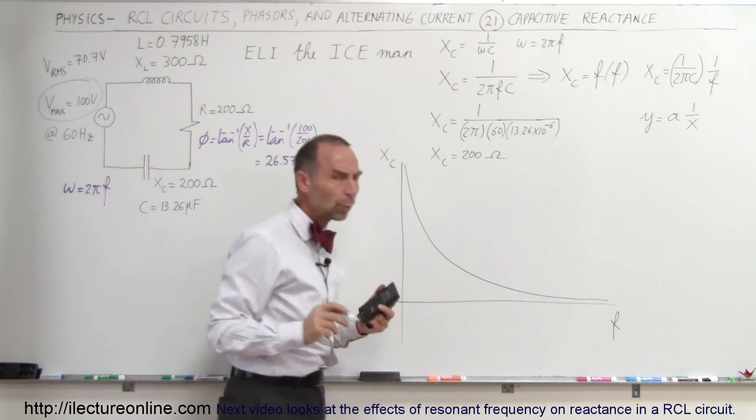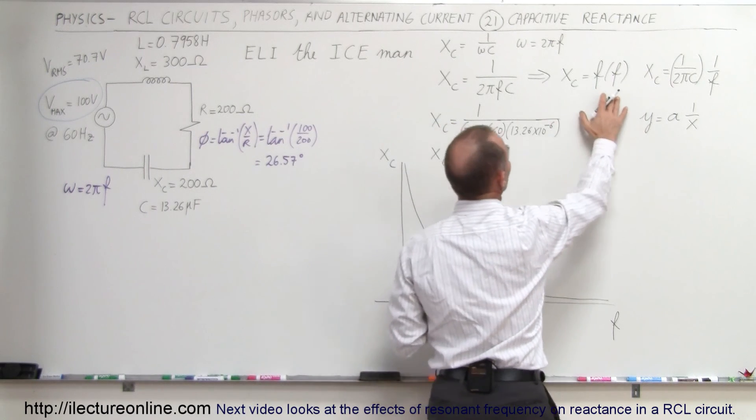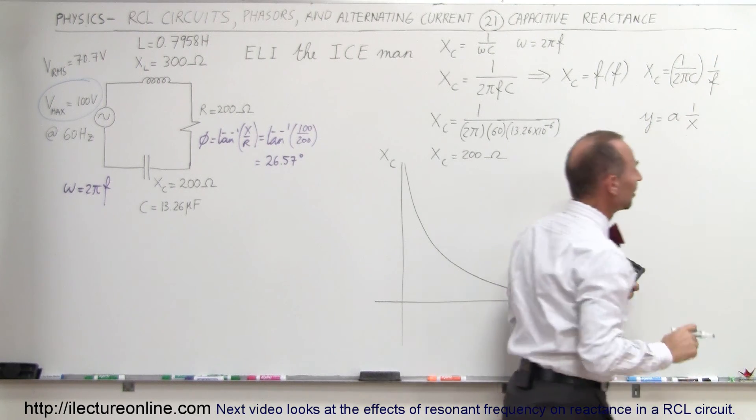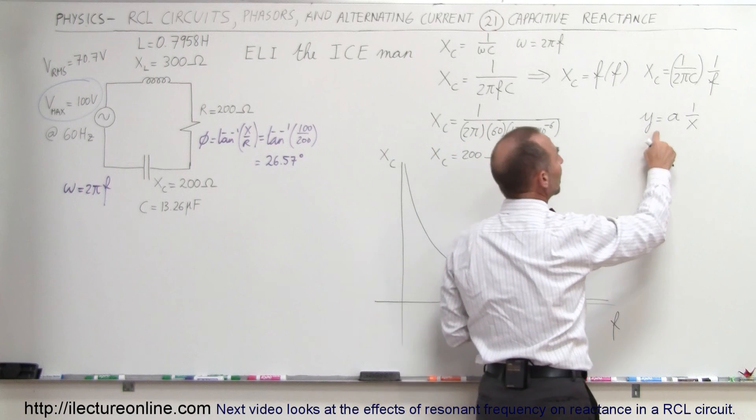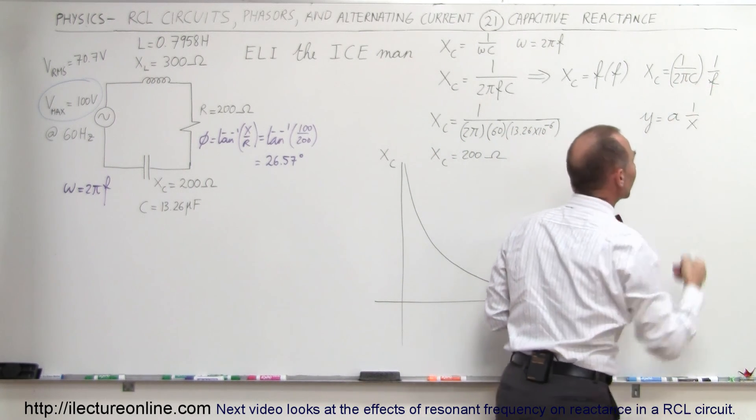Now, what does the equation look like? We realize it's a function of frequency, so we can write it as 1 over 2πC times 1 over f. That looks a lot like the inverse relation between y and x: y equals some constant times 1 over x. X_C equals some constant times 1 over f.